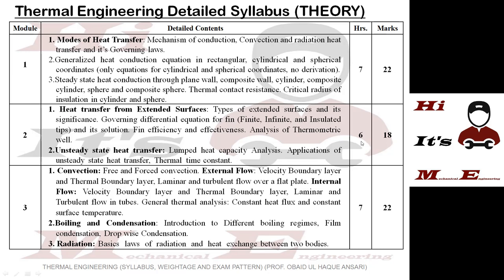Module 3 has three parts: convection, boiling and condensation, and radiation. In convection you study external flow and internal flow — flow over a flat plate and flow through a pipe — where theory and numerical questions can be asked. Boiling and condensation is purely theoretical: expect questions on different boiling regimes and the difference between film-wise and drop-wise condensation — no derivation, no numerical. For radiation, you study Stefan-Boltzmann law, Planck's law, Wien's displacement law, and heat exchange between two bodies — from which derivations and numericals can also be asked. Module 3 has 6 hours allotted and weighs 18 marks.